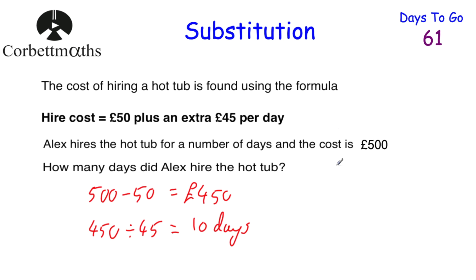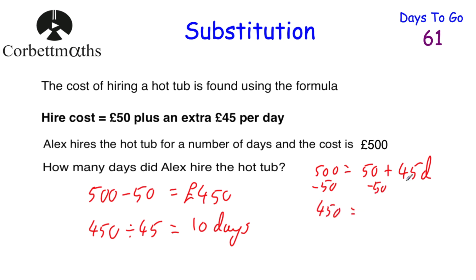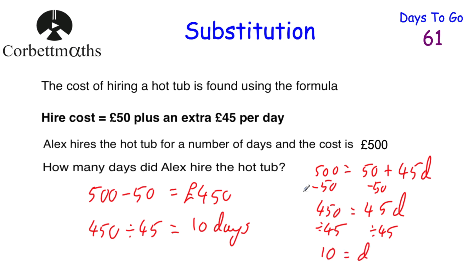Alternatively, form an equation: 500 equals 50 plus 45D, where D is the number of days. Subtract 50 from both sides: 450 equals 45D. Then divide both sides by 45: D equals 10. So the number of days is 10. And if you got that, well done.